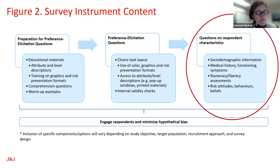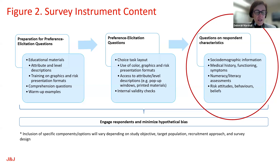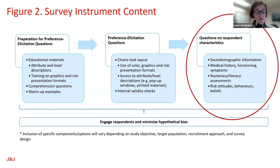When thinking about respondent characteristics, the paper identifies four things: thinking about the setting where you're administering the survey — at home or in the clinic — which can affect your decisions. The assistance level: how much help are people going to need to complete the survey? The sample characteristics relates to the target population itself and any special characteristics that might require adaptations. And then the experience with the health condition — whether the experience of the individual or their caregiving experience with that health condition and observing others' experience.